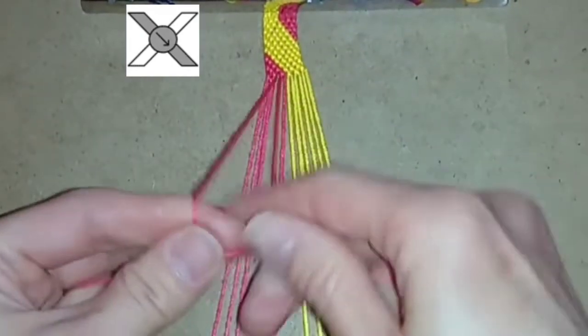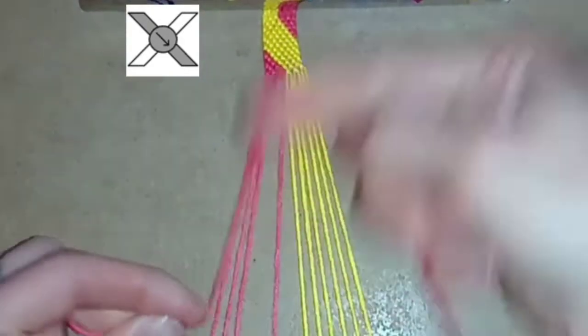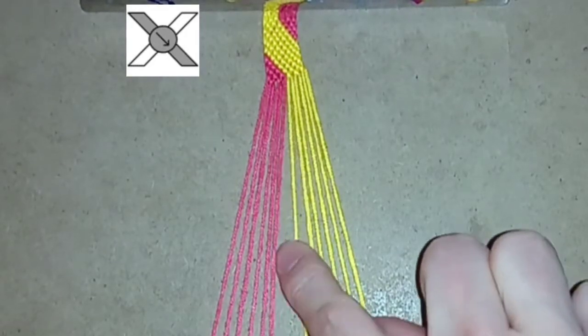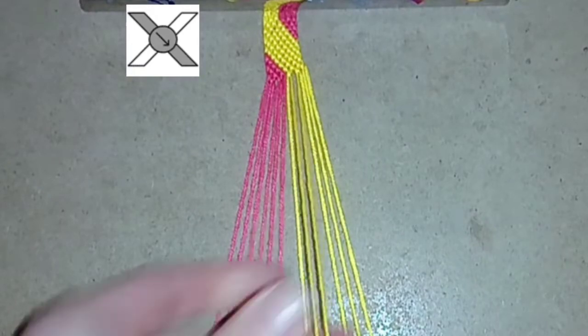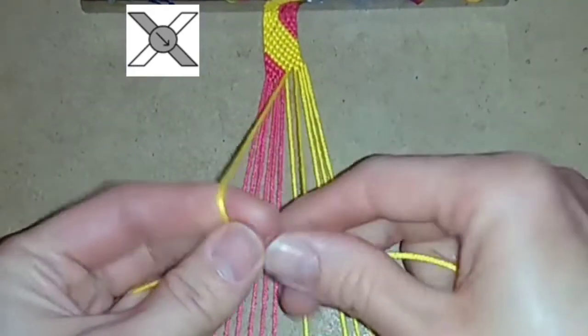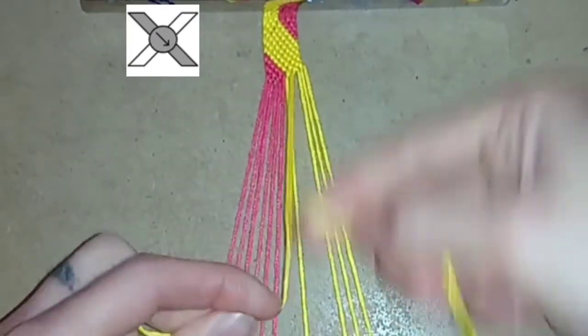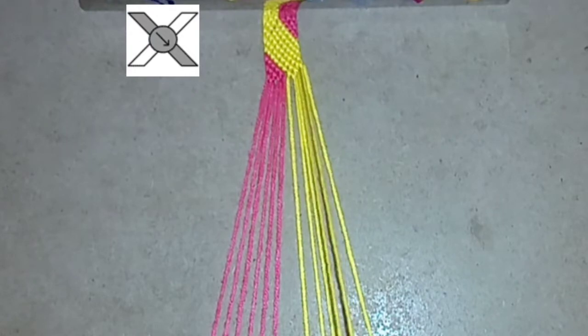Then again forward knot and it's forward knots all the way across except you're going to skip the next two threads. You want to ignore these two here and then working these two I'm going to do a forward knot and then one last forward knot.